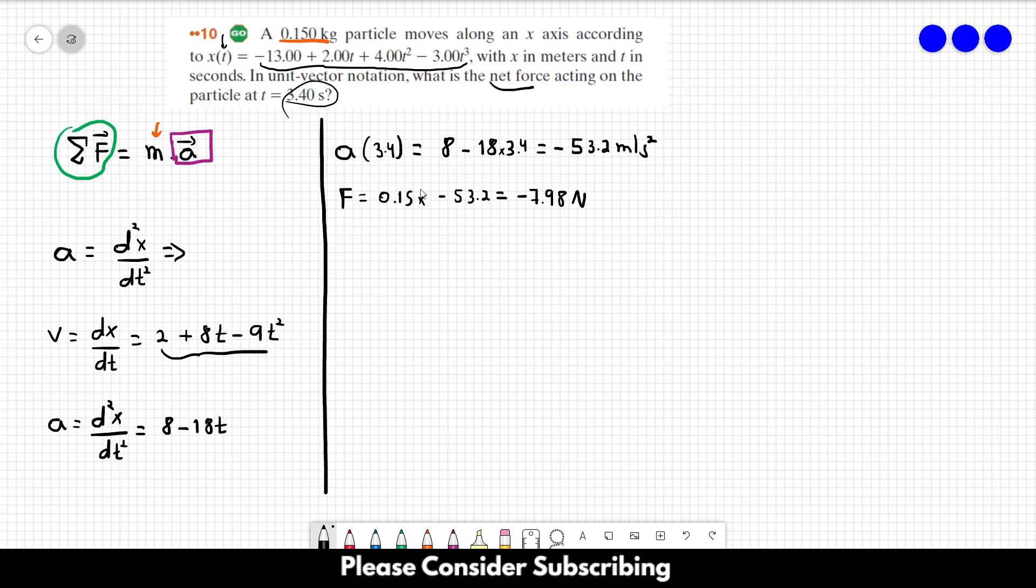But we want the force in unit vector notation. This is the absolute value of the force. Since the particle moves along the x-axis, the force is in the x-axis as well. So the vector F = -7.98î newtons. And that's it.